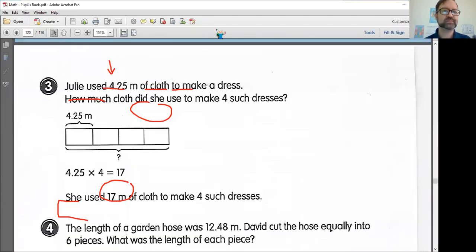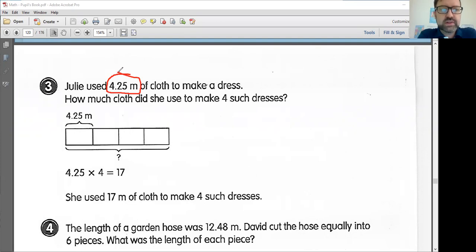Example three, Julie used 4.25 meters of cloth to make a dress. How much cloth did she use to make four such dresses? So we know that she used 4.25 meters to make one dress, and she's trying to make four. If we know the price of one, we want to figure out exactly four of the same type of thing, whatever it is, if it's dresses or candy bars or stuffed animals. This is just a simple multiplication problem. Here's our wonderful model. This is one, and then we have four here in total. We could add these up, but it's much easier and faster to multiply.